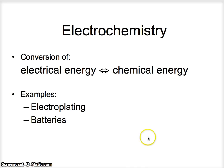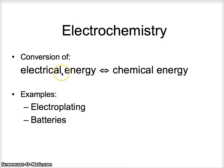Electrochemistry is essentially the conversion of electrical energy into chemical energy, and vice versa. If you can take chemical reactions, you can use them to produce electricity. And if you have electricity, you can use that to produce chemical reactions. Examples of this are electroplating, where you take electricity and you make chemical reactions happen. And the opposite of that is batteries, where you have chemical reactions and that produces electricity.